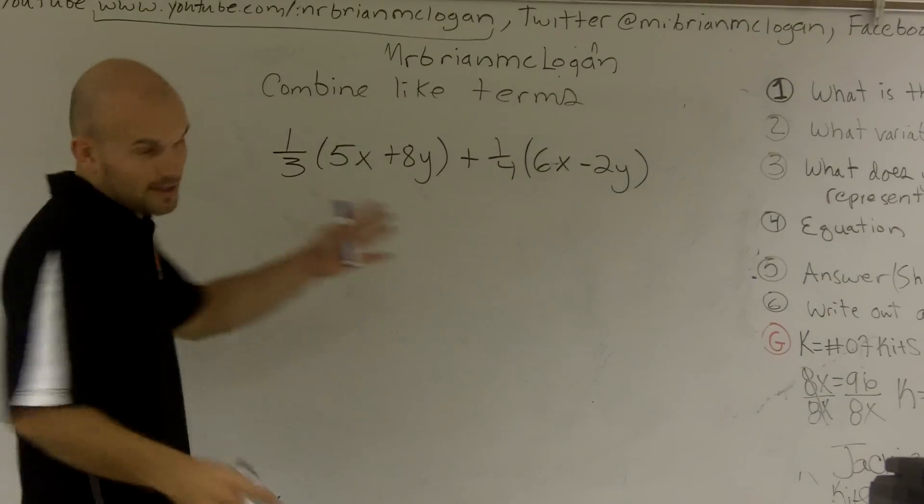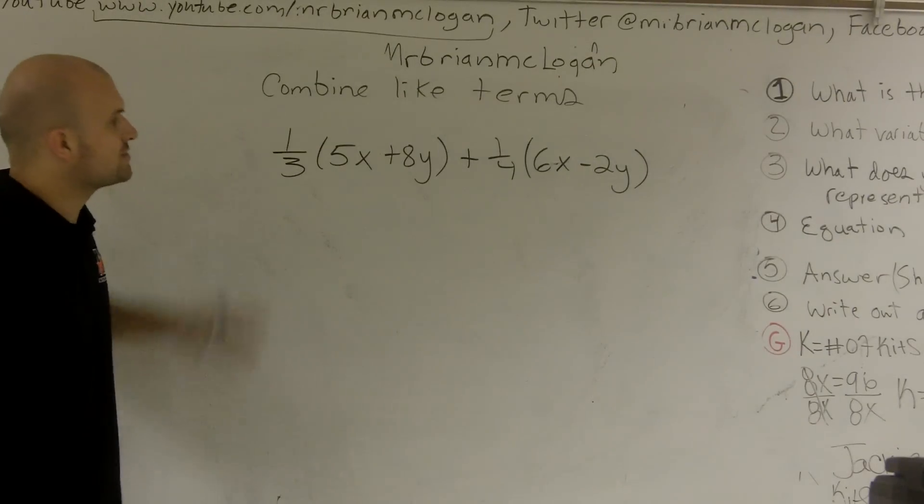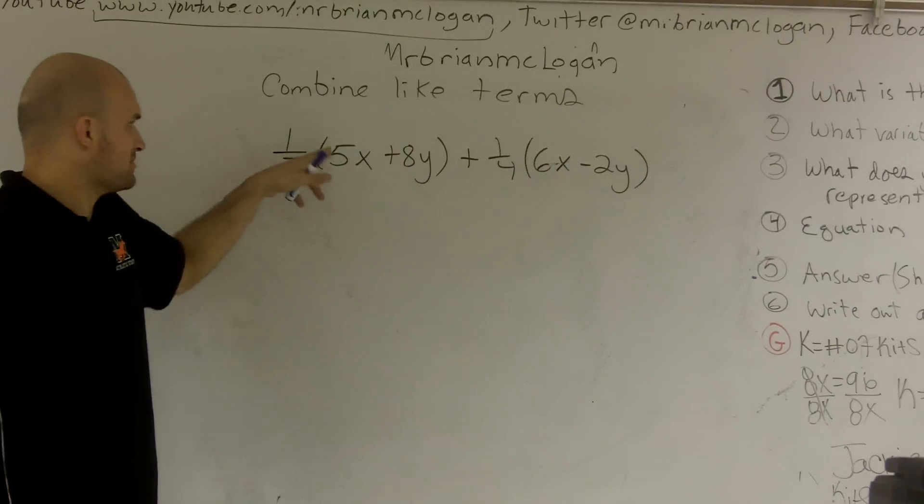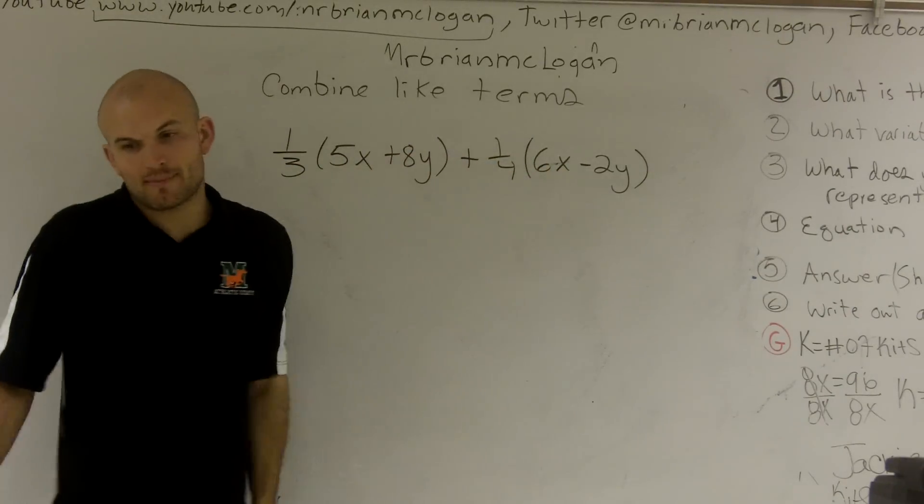I'm going to combine like terms. Before I can combine the terms, I can't add the 5x to the 6x because that's being multiplied by 1/3, and that's being multiplied by 1/4.